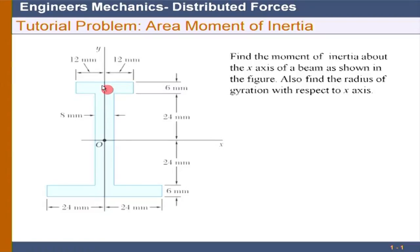We need to discretize into three different areas: the first area, the second area, and the third area. If you can simply divide it into areas and apply the parallel axis theorem accordingly, we should be able to get the results.